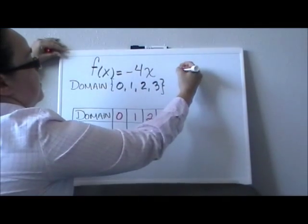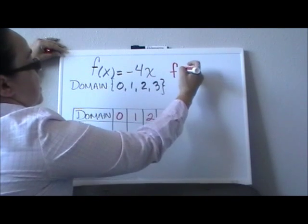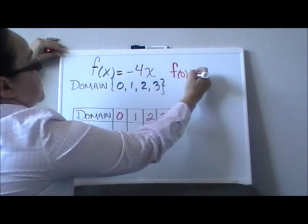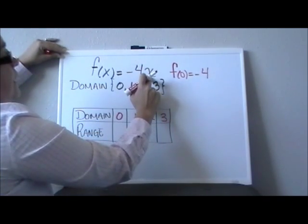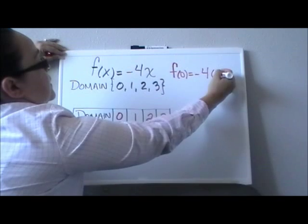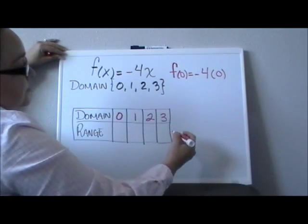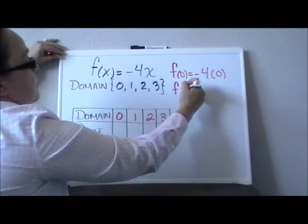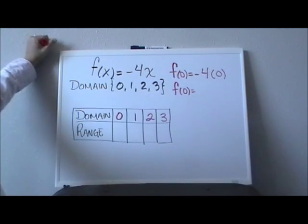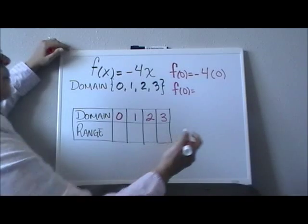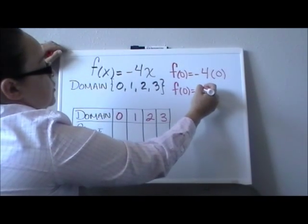So we are going to start with f of 0. So that will be negative 4, and instead of writing x I will put in parenthesis 0. So what is the value of f of 0, or what is the value of my function when x equals 0? Negative 4 times 0 equals 0.